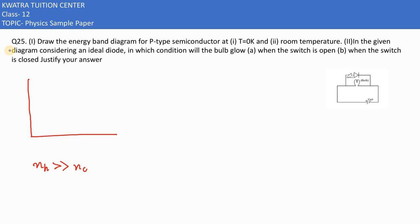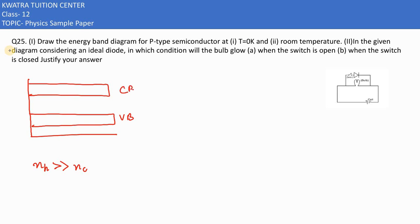For n-type, it is pentavalent with more electrons. Here, at T equal to 0 Kelvin, we have a valence band and a conduction band in the energy band diagram. The valence band would be completely filled — electrons fill it completely at T equal to 0 Kelvin.